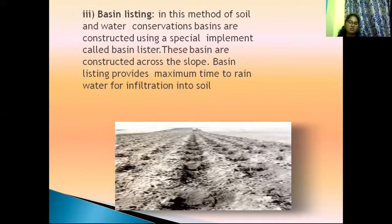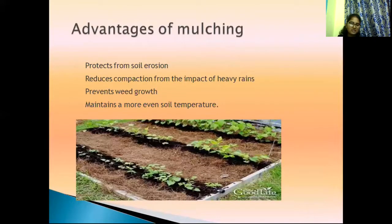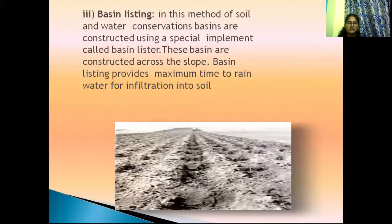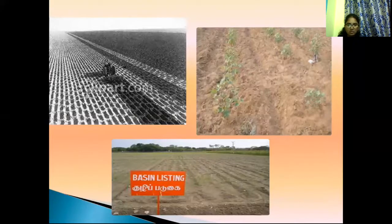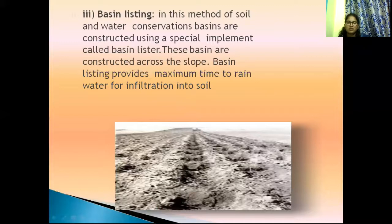Bunds are constructed across the slope. In slope areas we can go for this type of technique. Depending upon the land, we can go for different types of soil conservation methods. We have already discussed mulching and deep tillage. Basin listing — this method is effective for conserving the soil moisture and reducing soil erosion and is used only in slope areas.